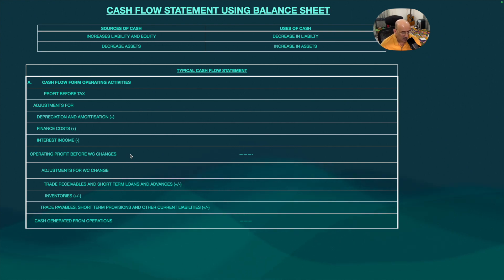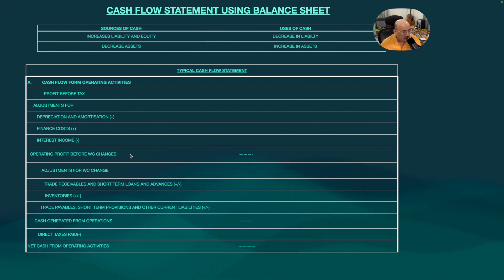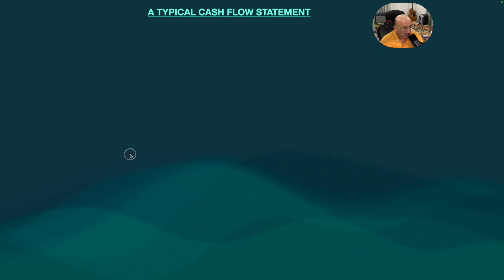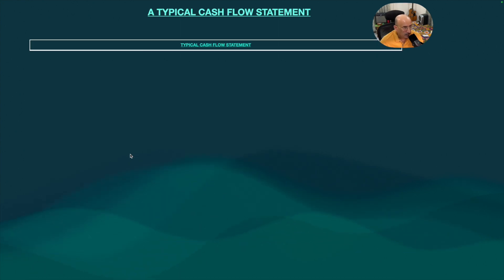This will give you cash generated from operations. Once done, you subtract the taxes paid, and this gives you the net cash from operating activities.